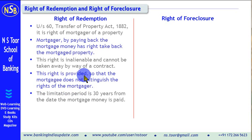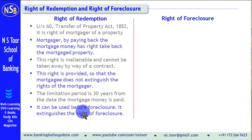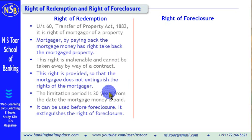The limitation period in case of right of redemption is 30 years from the date the mortgage money is paid. Once the mortgage money is paid, within the next 30 years the mortgagor can use this right to take back the property from the mortgagee. It can be used before foreclosure. This right can be used after payment of the loan within 30 years, but before the mortgagee has taken the right of foreclosure.